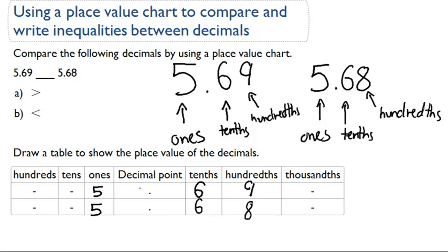So we can confidently say the numbers are the same up until the hundredths place, but 5.69 has a nine, and 5.68 has an eight here. So we can say that 5.69 is greater than 5.68 because the nine in the hundredths place is greater than the eight in the hundredths place. So we're going to choose option A, and that's the correct answer.